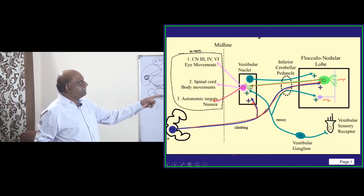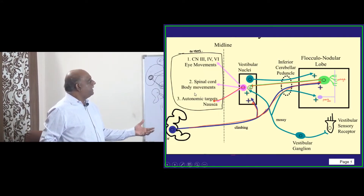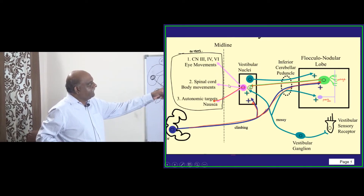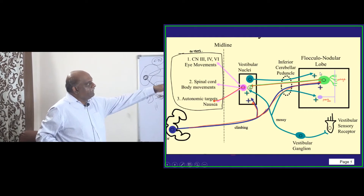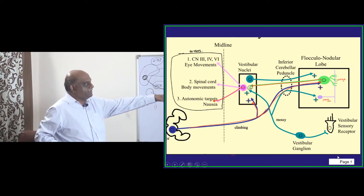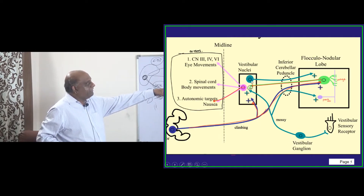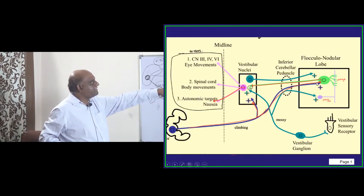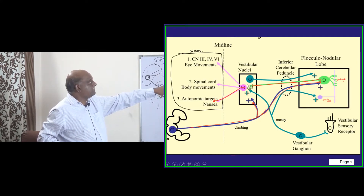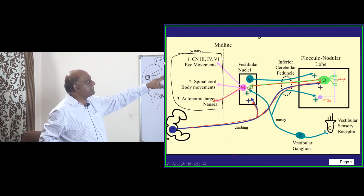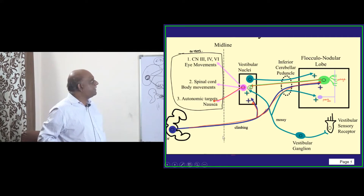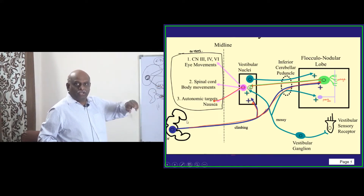The vestibular nuclei, through the inferior cerebellar peduncle, update information received from the vestibular sensory receptors and send it to the flocculo-nodular lobe. The Purkinje cells process this information and send it back to the vestibular nucleus. The vestibular nucleus has connections with cranial nerves 3, 4, and 6 controlling eye movements, and also sends information to the spinal cord to control body movements, and to the autonomic nervous system.